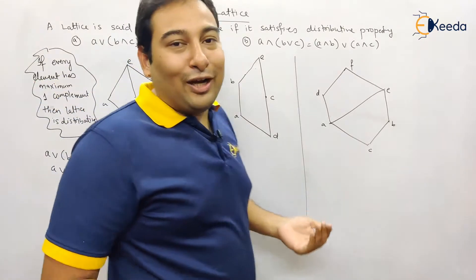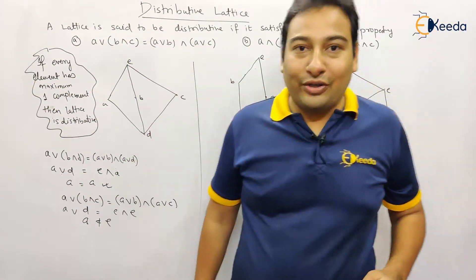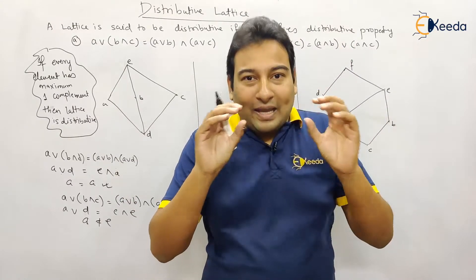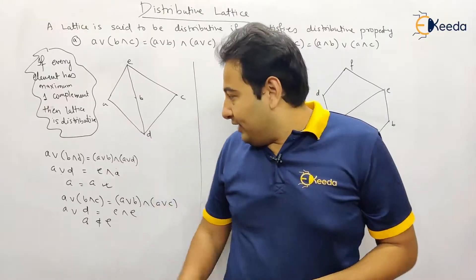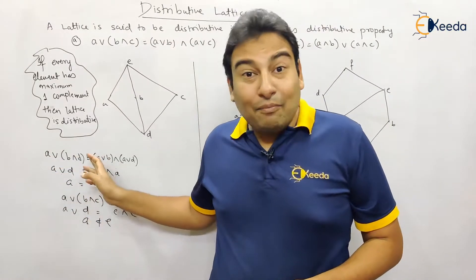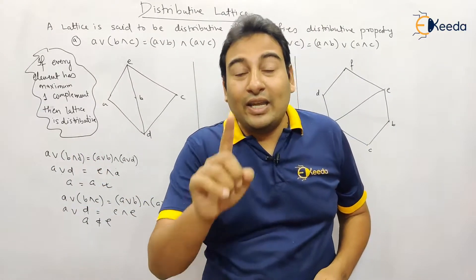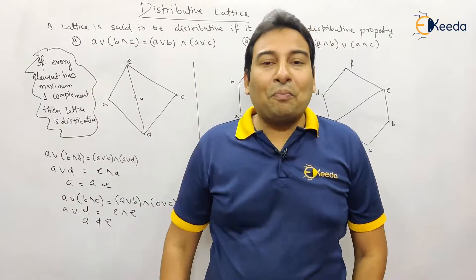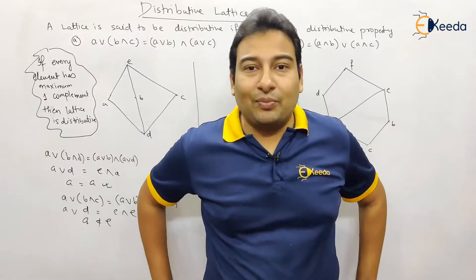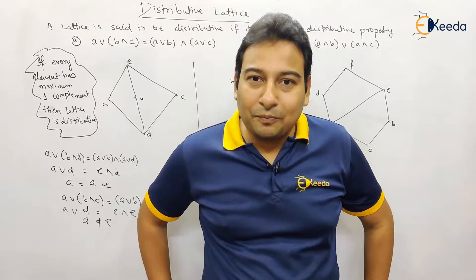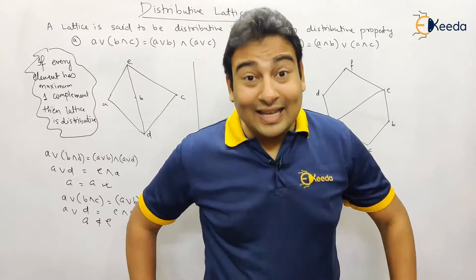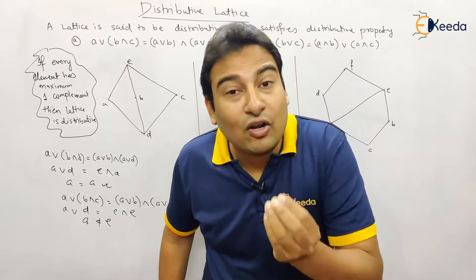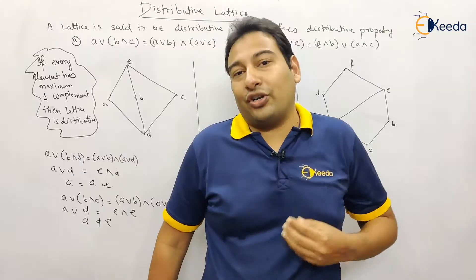So what should be the conclusion — is it distributive or not distributive? If there are n number of pairs satisfying the property but only one pair which is not satisfying the property, then the lattice is not distributive. Even if n number of pairs satisfy and only one pair does not, the lattice is still not distributive.